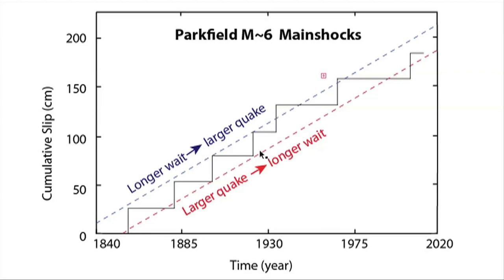For example, the 1934 earthquake occurred about a decade earlier than the average interval. The 2004 earthquake struck one to two decades later than the average interval, and was somewhat larger than its predecessors, so there's variability.